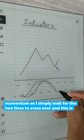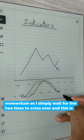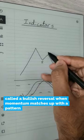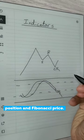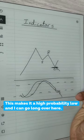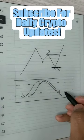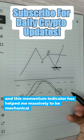So I simply wait for the two lines to cross over, and this is called a bullish reversal where momentum matches up with a pattern, position, and fibonacci price. This makes it a high probability low and I can go long over here, put my stop loss down here. This momentum indicator has helped me massively to be mechanical and objective.